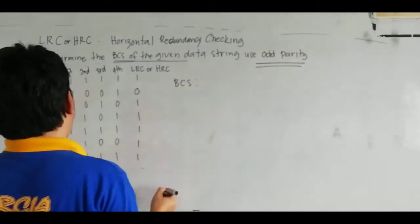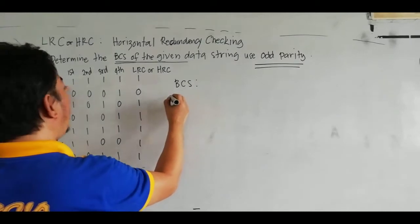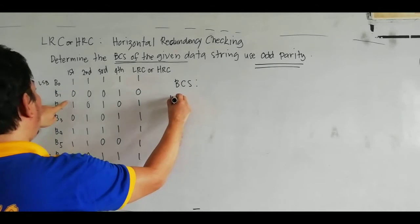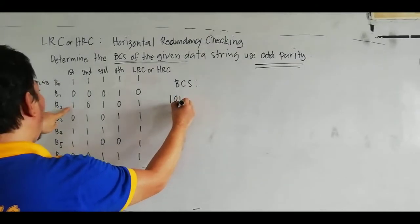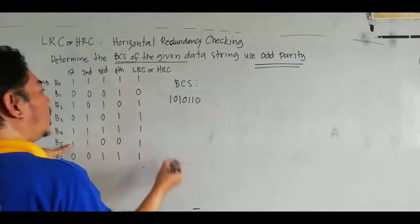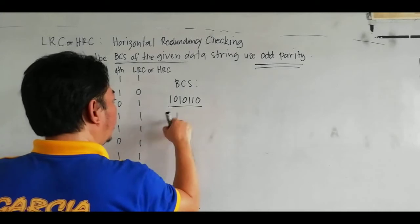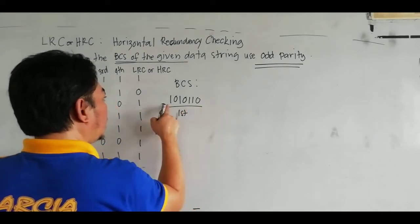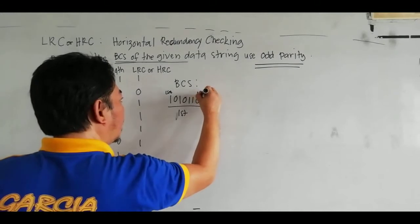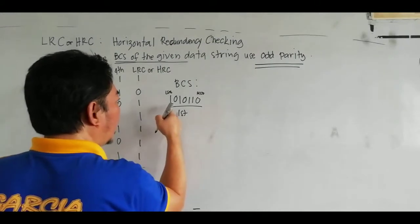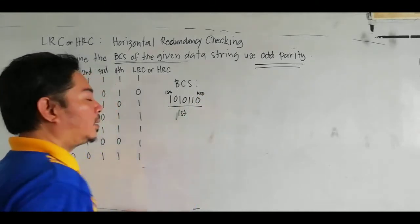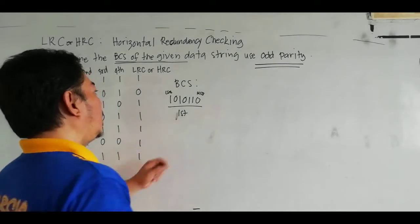The BCS of the given data is read from the first bit — that is the least significant bit. The first data string reads: 1, 0, 1, 0, 1, 1, 0. This is your LSB and this is your MSB. Take note that this is a 7-bit code: 1, 2, 3, 4, 5, 6, 7 — a 7-bit code.